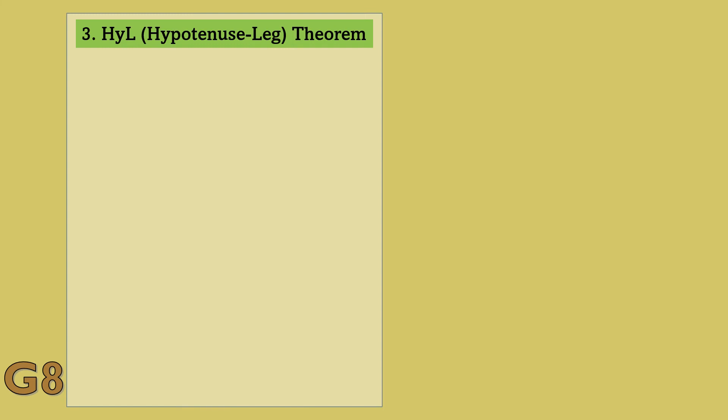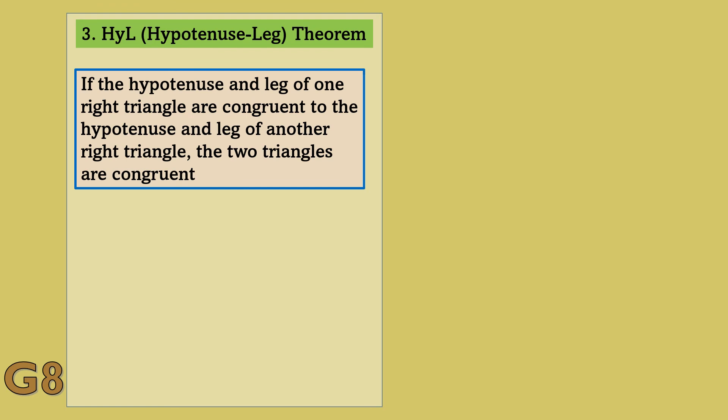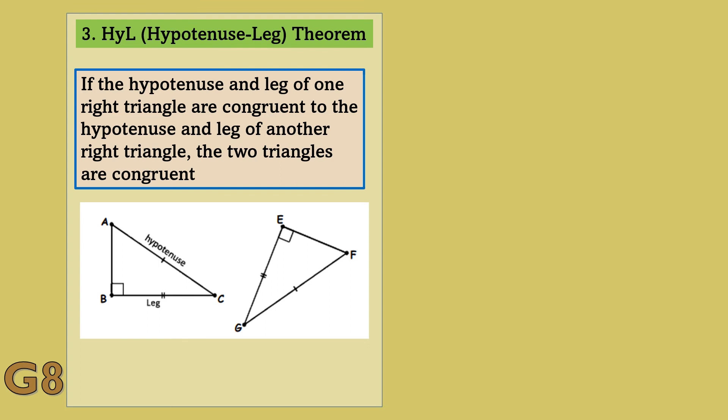Another theorem is the HYL or Hypotenuse-Leg Theorem. It states that if the hypotenuse and leg of one right triangle are congruent to the hypotenuse and leg of another right triangle, the two triangles are congruent. In this figure, triangle ABC and triangle FEG are both right triangles. As marked, one leg of triangle ABC — line segment BC — is congruent to one leg of triangle FEG — line segment EG. And the hypotenuse of triangle ABC, line segment AC, is congruent to the hypotenuse of triangle FEG, line segment FG.